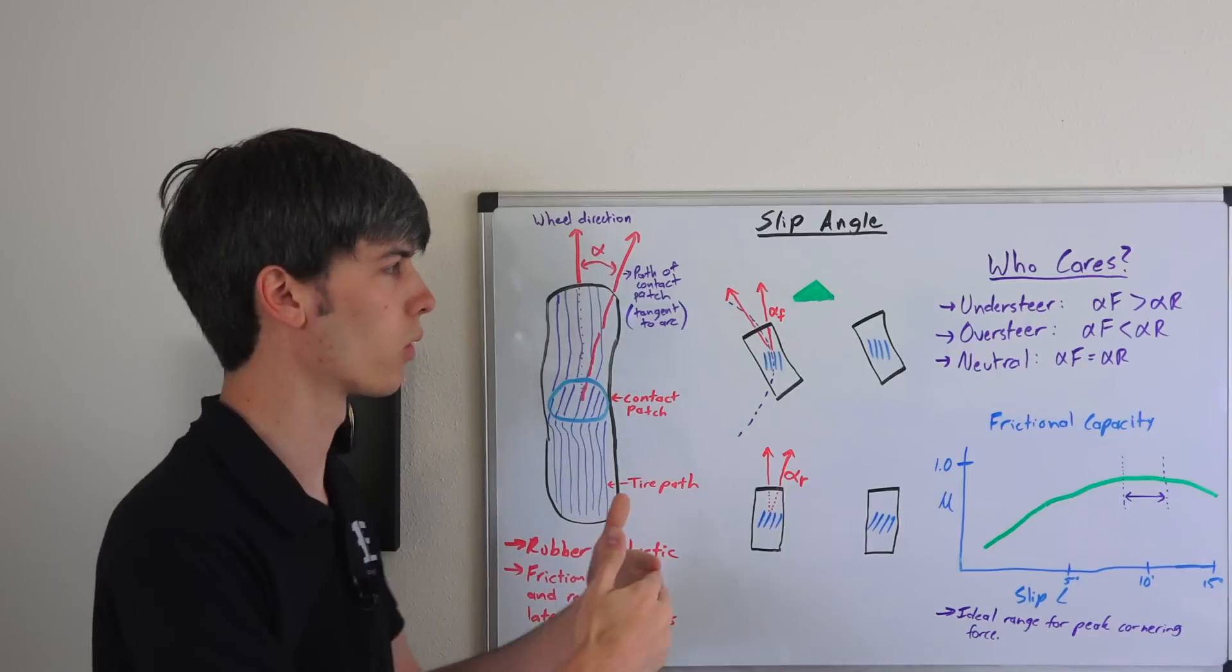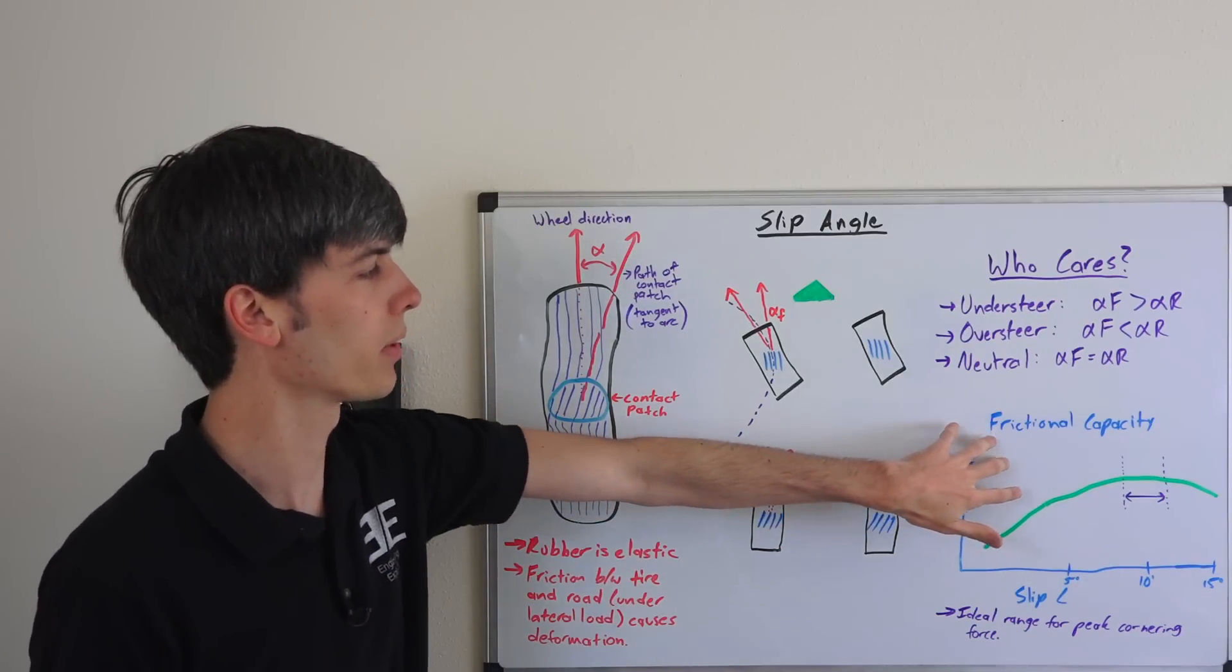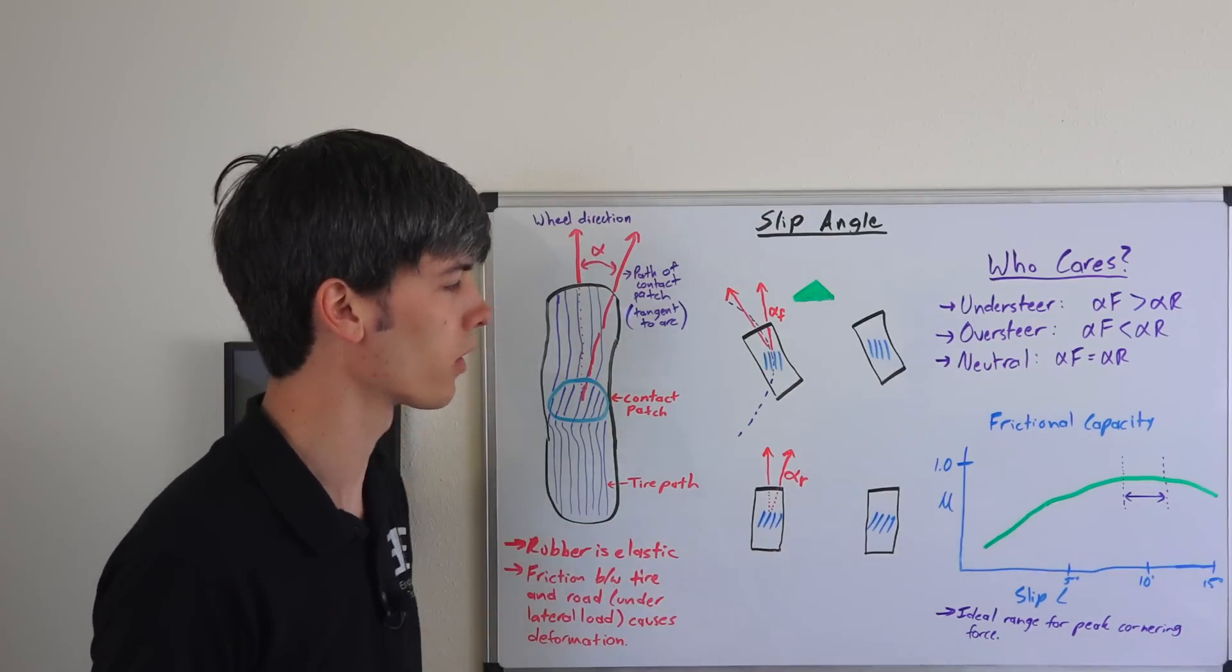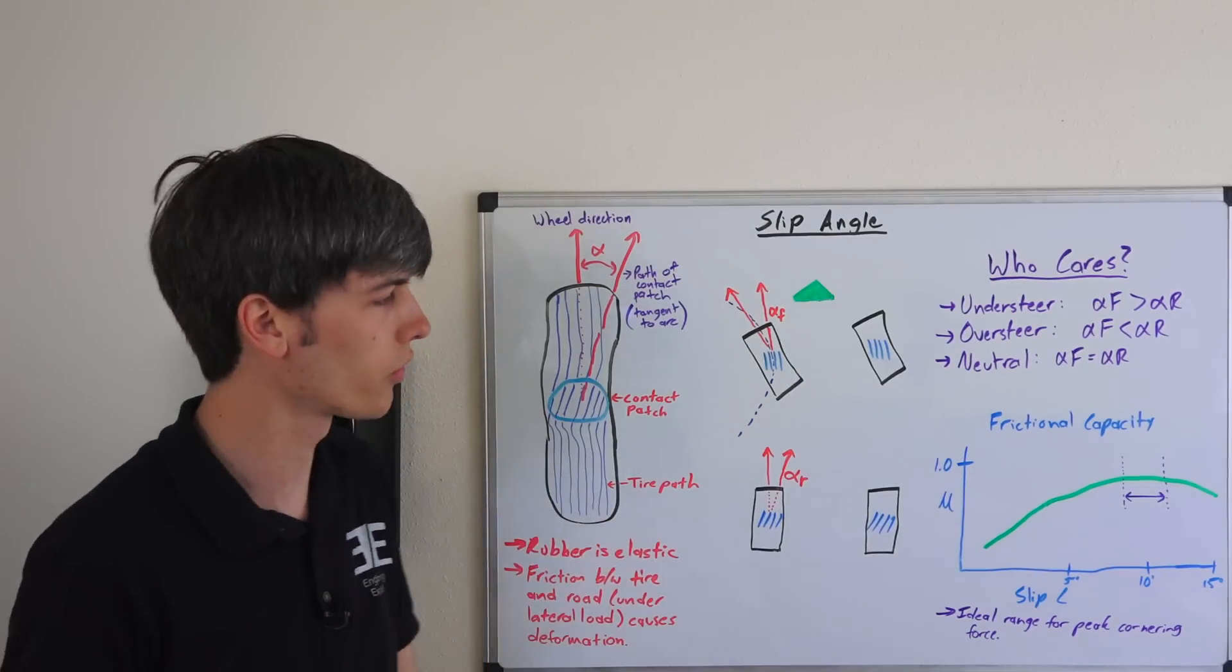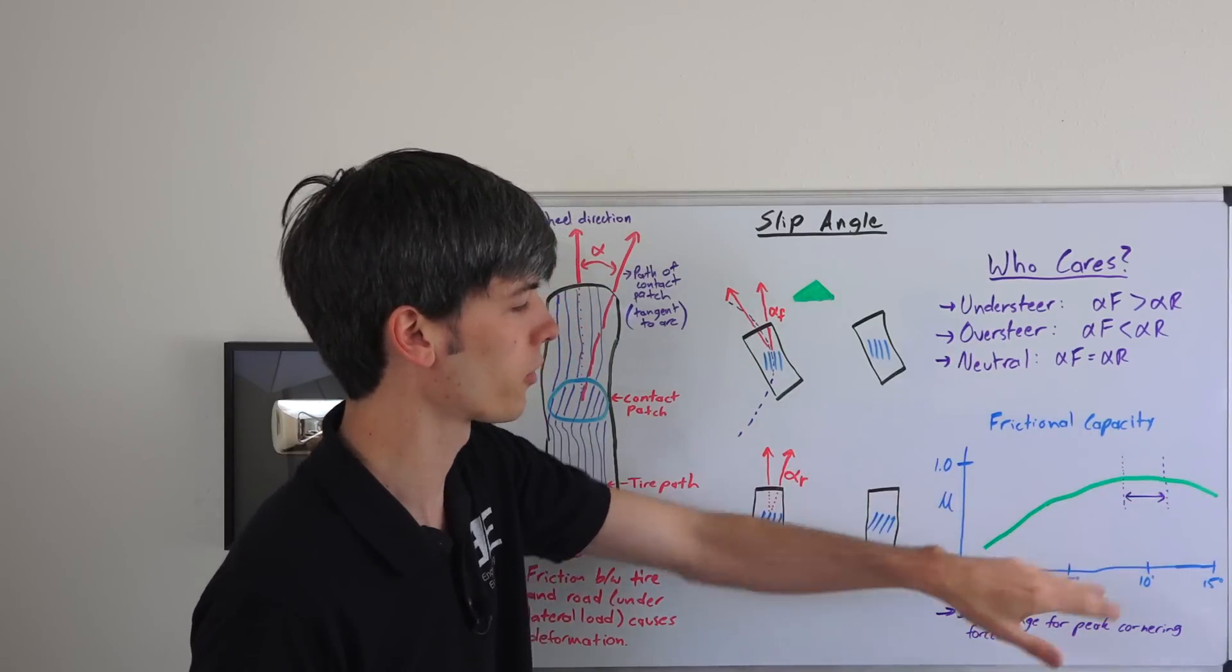Now it also plays a role in frictional capacity. As you change your slip angle, your coefficient of friction changes as well, and there's some peak range which is where you want to keep it for maximum lateral load.